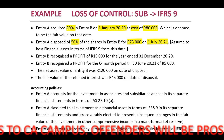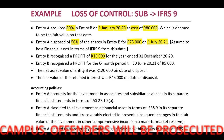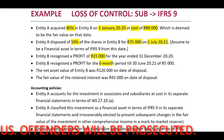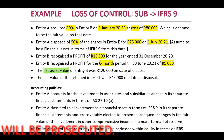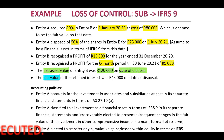Entity B recognized a profit of $15,000 for the year ending 31 December 2020, and a profit of $5,000 for the six-month period to 30 June 2021. The net asset value of Entity B was $120,000 on date of disposal, and the fair value of the retained interest was $45,000 on date of disposal. Entity A accounts for investments in associates and subsidiaries at cost in its separate financial statements in terms of IAS 27, paragraph 10, and classifies this investment as a financial asset in terms of IFRS 9, irrevocably electing to present subsequent changes in fair value in other comprehensive income in a mark-to-market reserve.